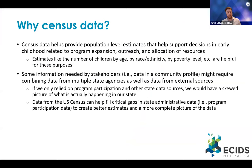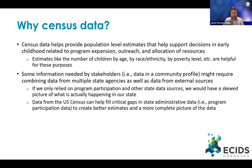Why use census data? From a general perspective, census data helps us provide population-level estimates that support decisions in early childhood related to program expansion, outreach, and allocation of resources. Estimates like the number of children by age, race and ethnicity, and poverty level are really helpful for these purposes. In our outreach, we found that information needed by stakeholders — for community profiles or community assessment work — might actually require combining data from multiple state agencies as well as external sources. If we only relied on program participation data and other state data sources, we'd have a skewed picture of what's actually happening. Data from the U.S. Census can really help fill in critical gaps in state administrative data to help create a much more complete picture of early childhood in our state.